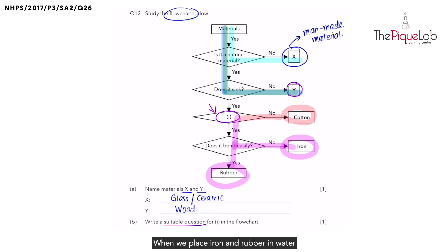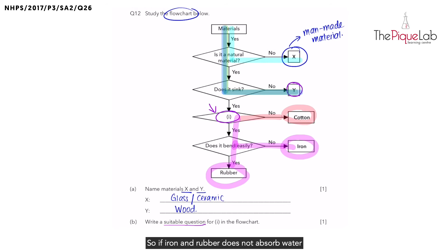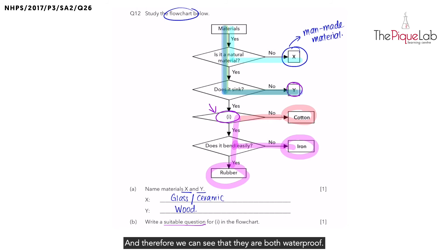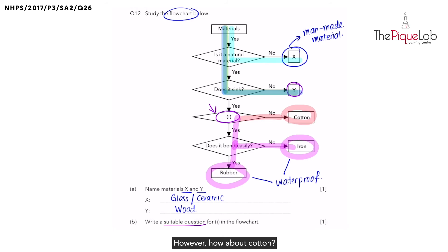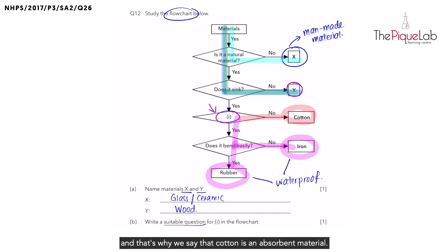Here's a hint: when we place iron and rubber in water, would they absorb the water just like how a sponge would? No, right? So if iron and rubber do not absorb water, it means they are not absorbent, and therefore we can say that they are both waterproof. However, when we place cotton in water, it's going to absorb the water. That's why we say cotton is an absorbent material, which means it is not waterproof.